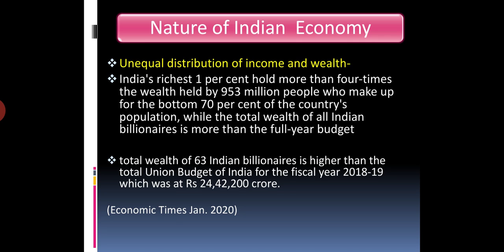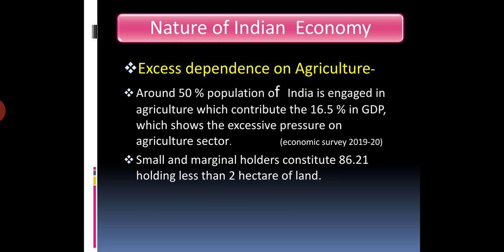Furthermore, the total wealth of all Indian billionaires is more than the full-year union budget of India. The total wealth of 63 Indian billionaires is higher than the total union budget of India for the fiscal year 2018-19. That budget was 24,42,200 crore rupees, and the wealth of just 63 people exceeds this. This data is from Economic Times, January 2020.